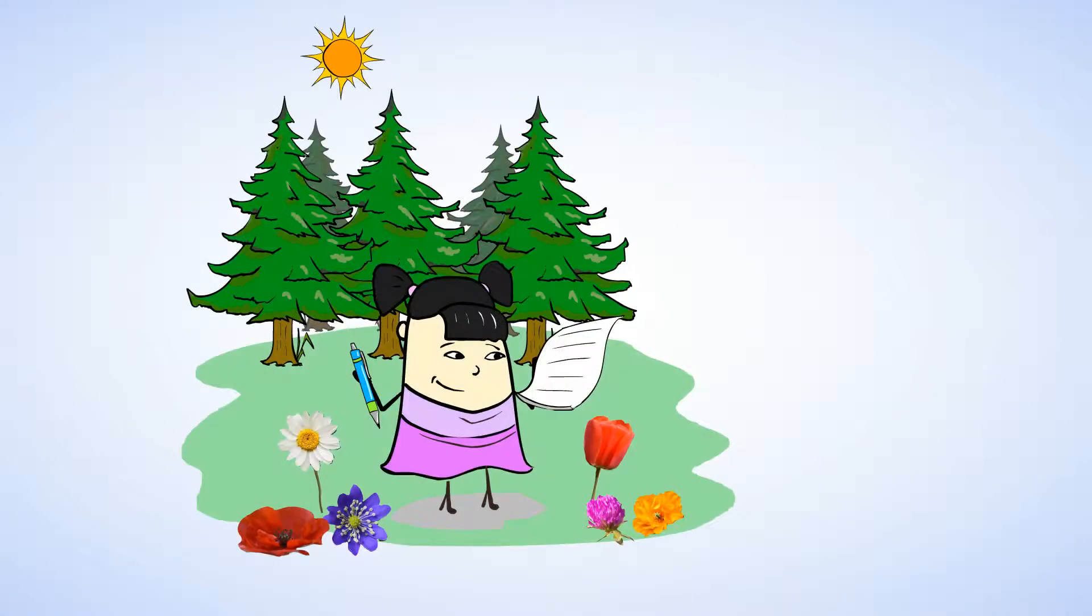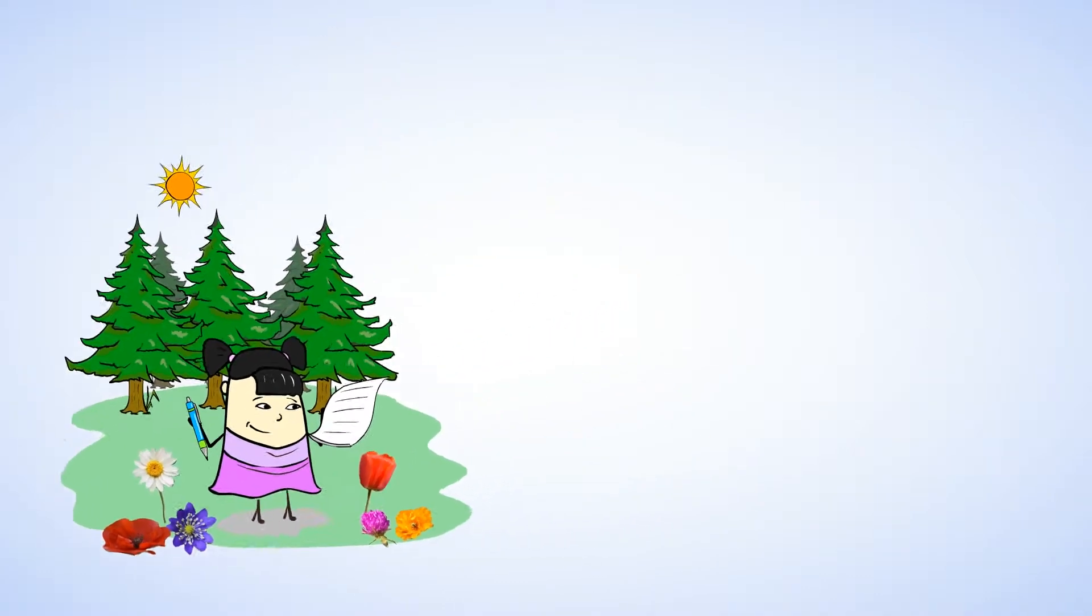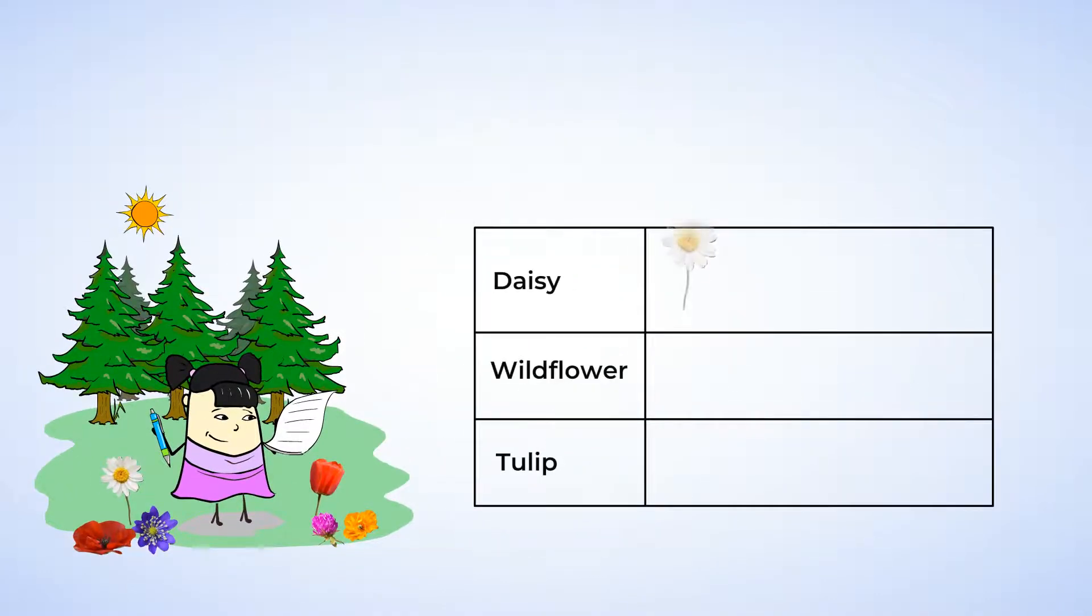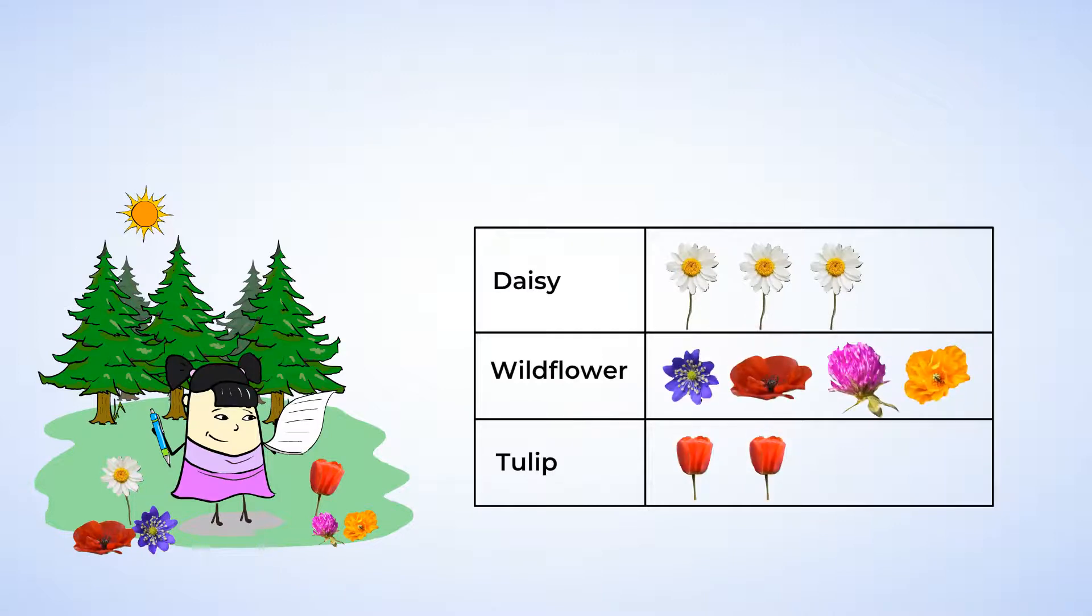While we have been graphing, Sue has been making her own picture graph of the types of plants she has seen. Let's take a look at her graph and see if we can help her out. I think we can help make Sue's picture graph more accurate. Take a look at the picture graph and think about what looks incorrect.